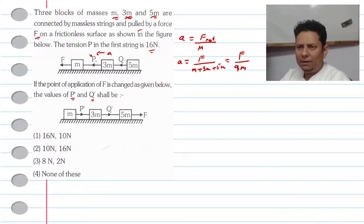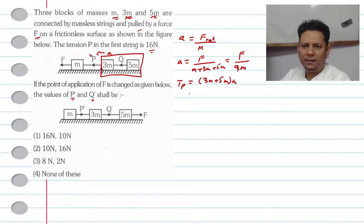Now considering tension P: if we take these two blocks (3M and 5M), they have the same acceleration, which means the tension at P will be (3M plus 5M) times acceleration A. So the tension at P will be 8M multiplied by A. This value is 16N.